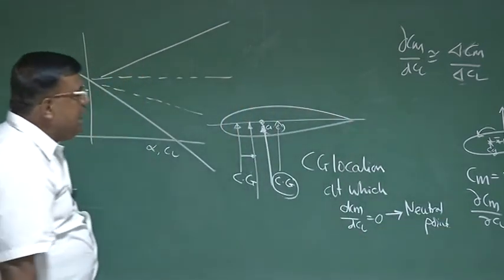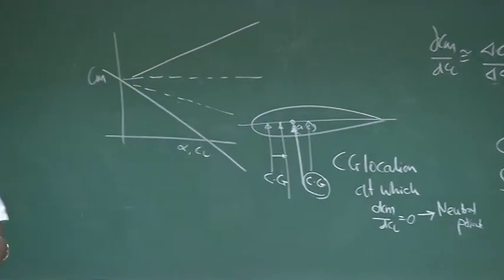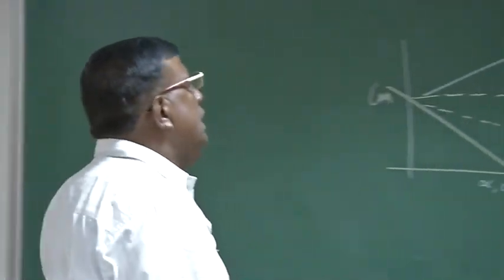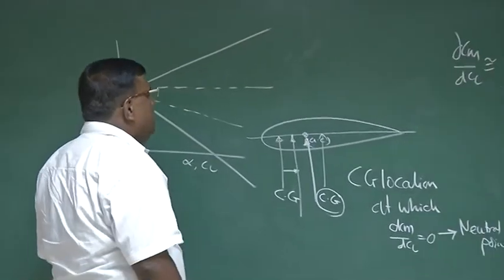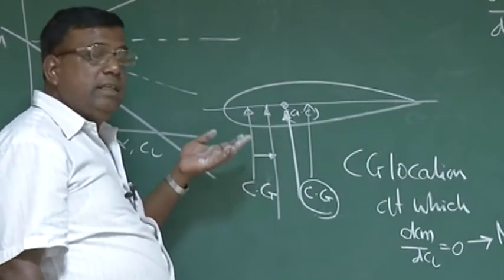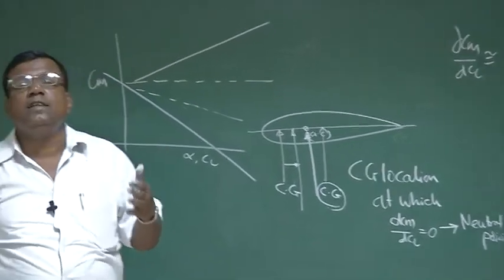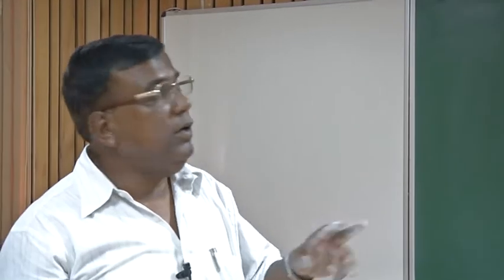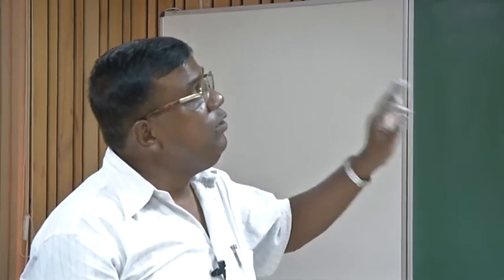For a designer, finding the neutral point is important because it depends on the configuration — the size of the wing, aspect ratio, taper ratio, the aerofoil used. For a wing-alone airplane, if you want to make it statically stable, you ensure that the AC is behind the CG, or equivalently, the CG never crosses the neutral point. For this wing-alone case, AC and neutral point are the same.